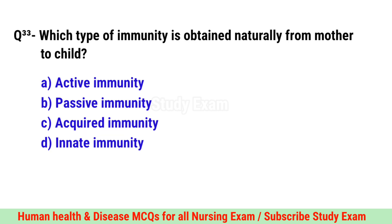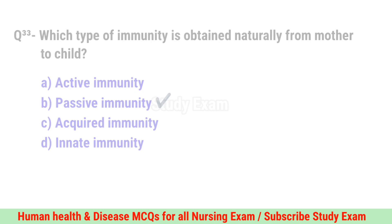Question No. 33. Which type of immunity is obtained naturally from mother to child? Correct option is B. Passive immunity.